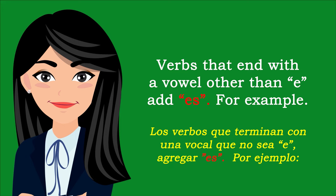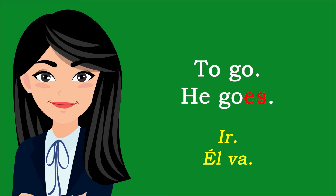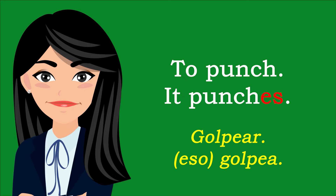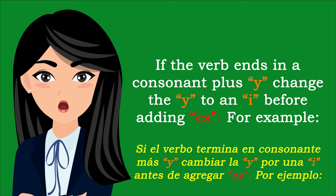Verbs that end with a vowel other than E, or with a sibilant sound, add ES. For example: To go — He goes. To kiss — She kisses. To punch — It punches.